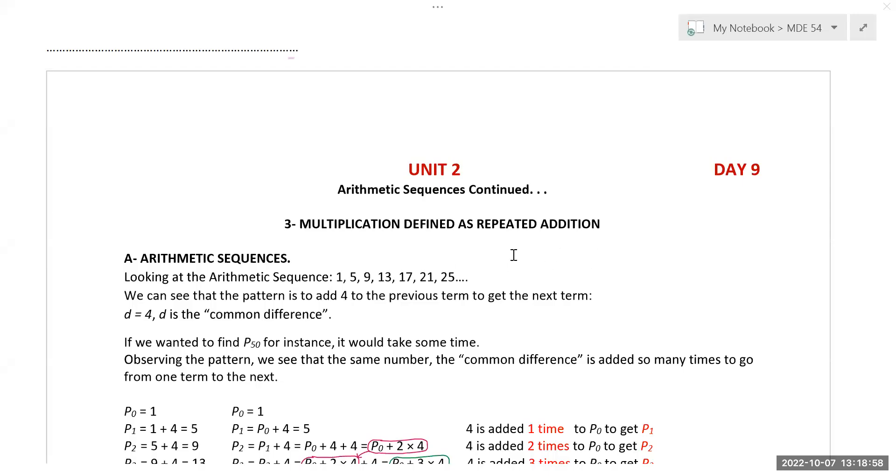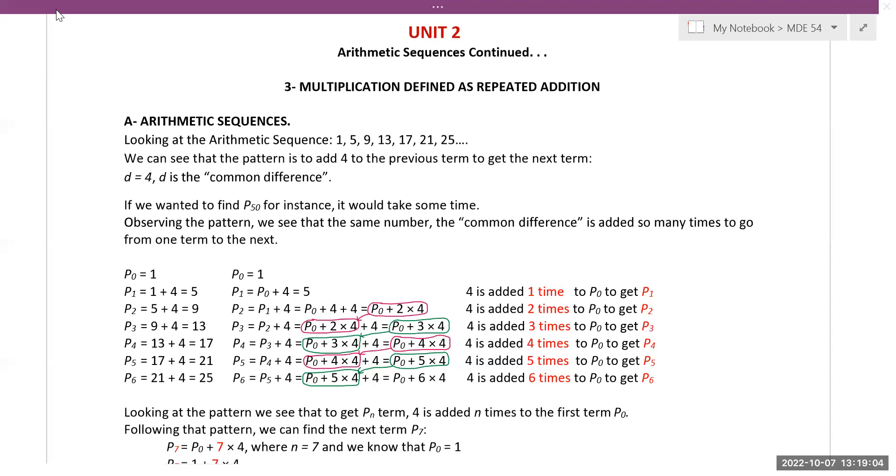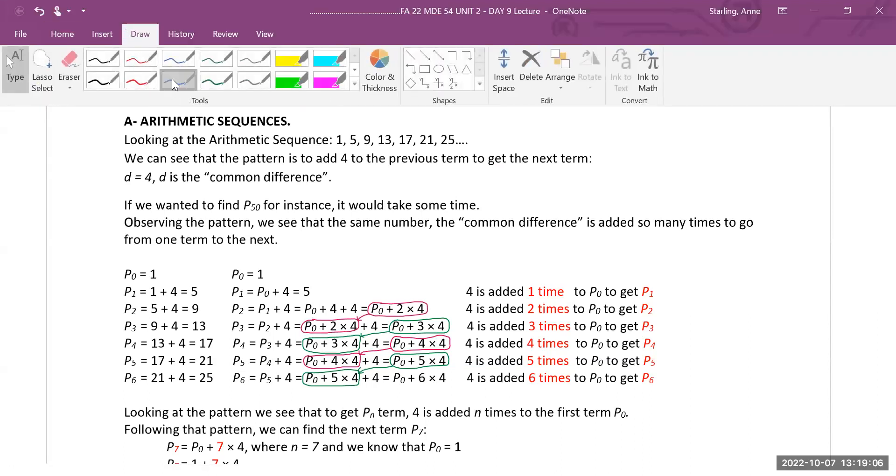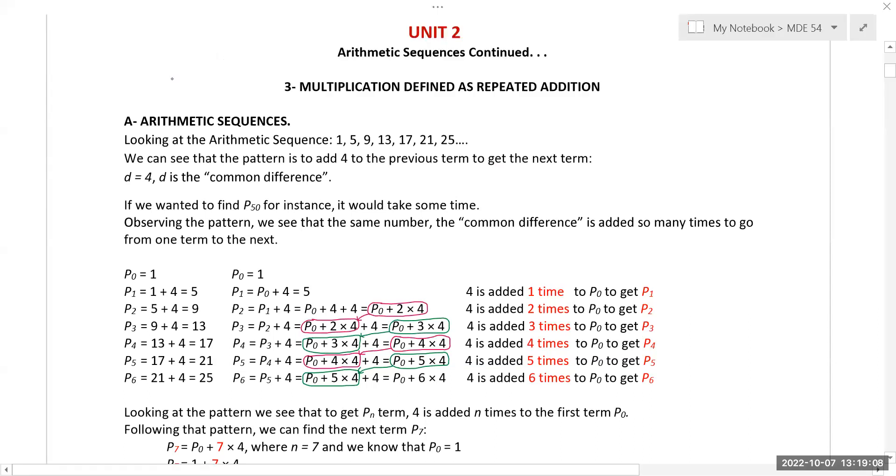Okay, here we go on our arithmetic sequences continued. When you're doing multiplication, what you're really doing is repeating addition. So if we look at something like 1, 5, 9, 13, etc., we're adding 4 every time.